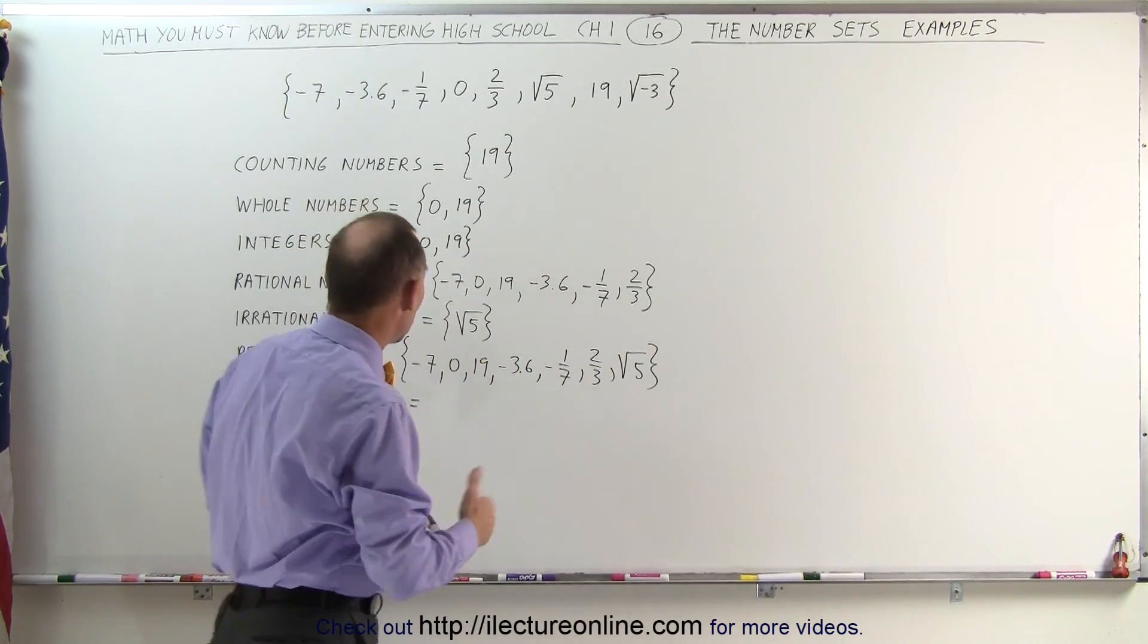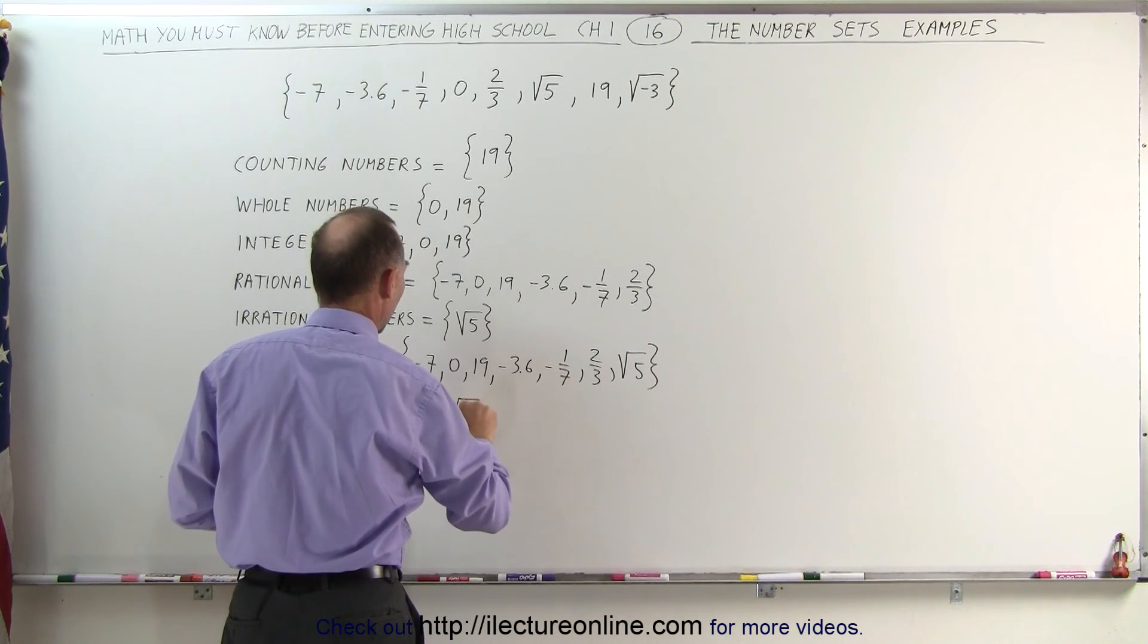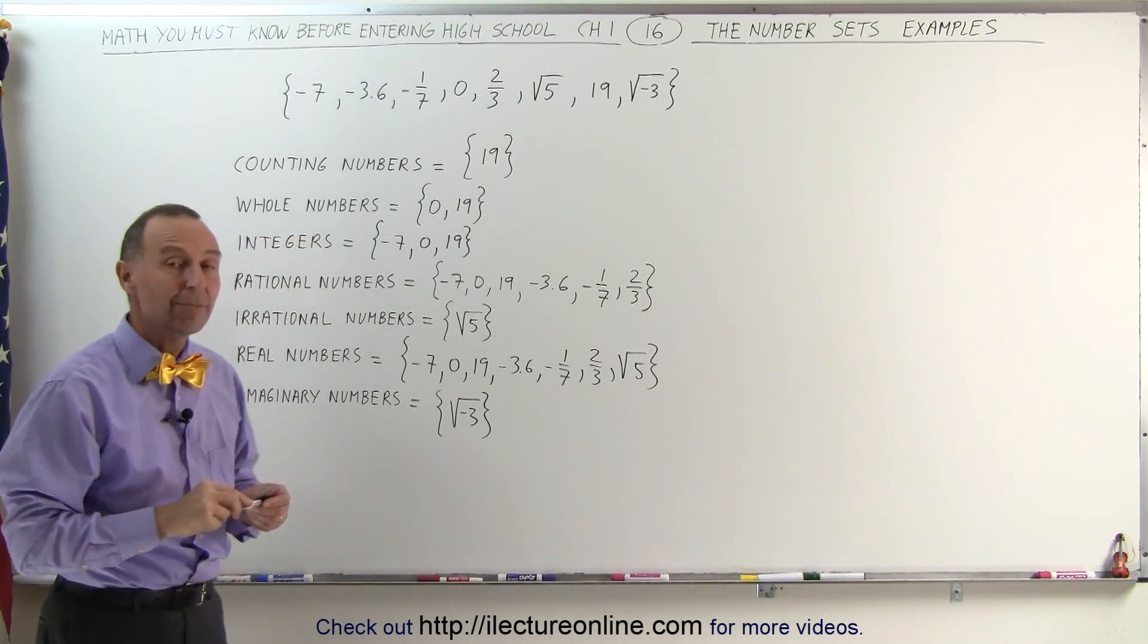It's not a real number. So we include that in the set of the imaginary numbers. The square root of a negative number does not exist, and therefore that is called an imaginary number.